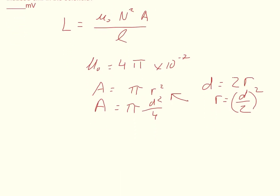Now we substitute: the inductance equals 4π × 10⁻⁷ times N squared times π times d squared, all over 4L. Or if you prefer, you can keep the 4 under d, but it gives the same result.